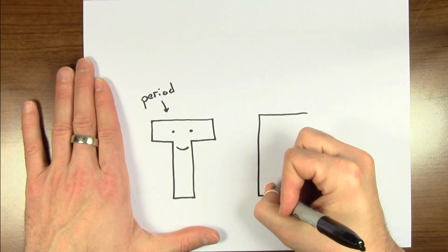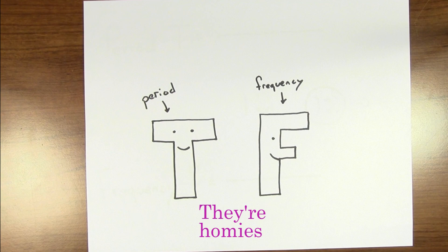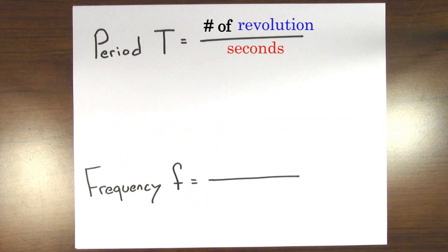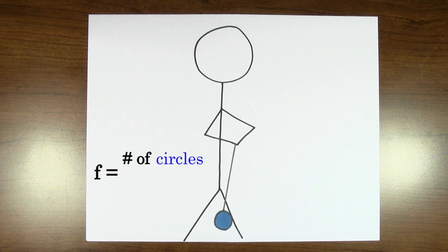Period has a partner variable called frequency. I say they're partners because while period is the number of seconds per revolution, the frequency is the number of revolutions per second. So the frequency in this case would be how many circles the yo-yo travels through in one second.